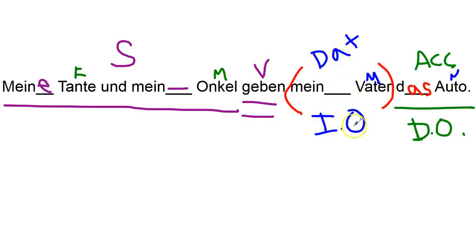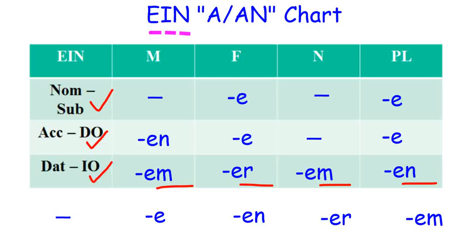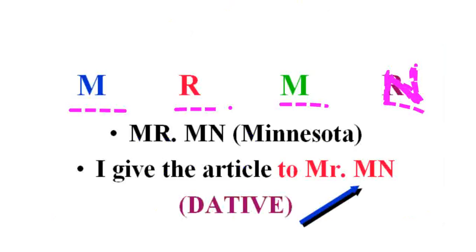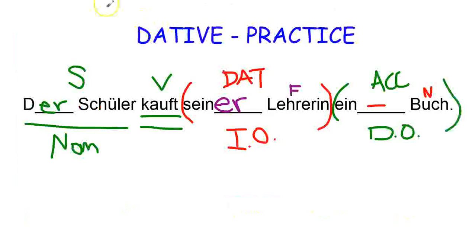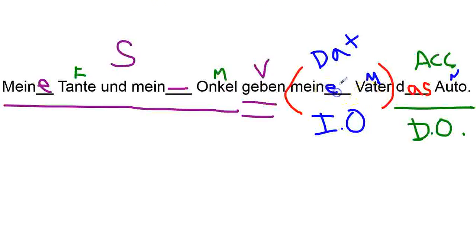So, my dad, dative indirect object. Oh, sorry. Dative masculine. Masculine, dative, E-M ending. Oops. Oh, got a little carried away there. Meine Tante und mein Onkel geben meinem Vater das Auto. Okay.